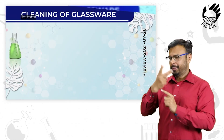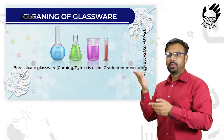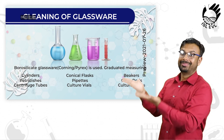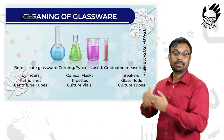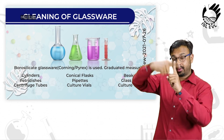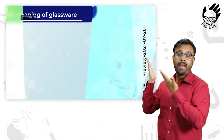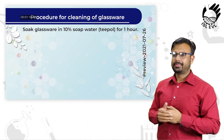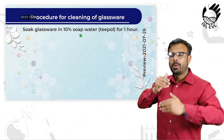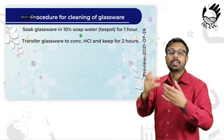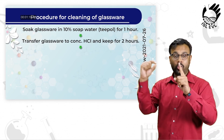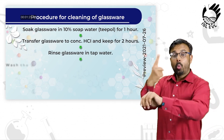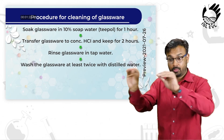Cleaning of glassware: borosilicate glassware is used, along with graduated measuring cylinders. Procedure for cleaning: soak glassware in 10% soap water, then transfer glassware to HCl.